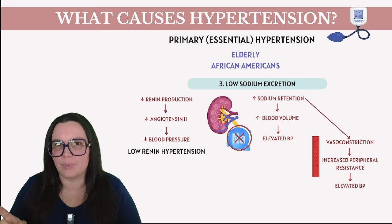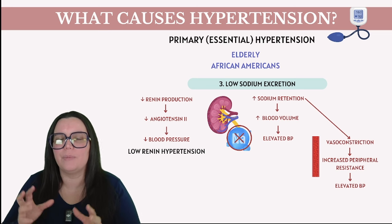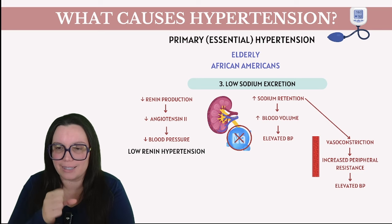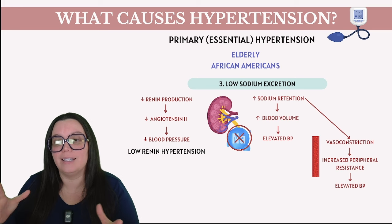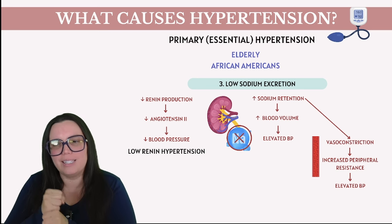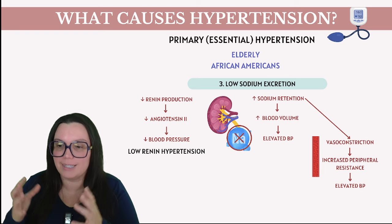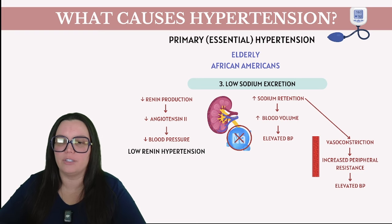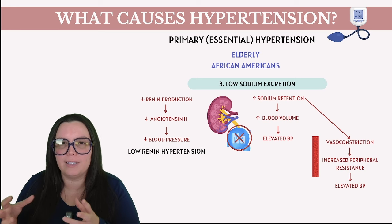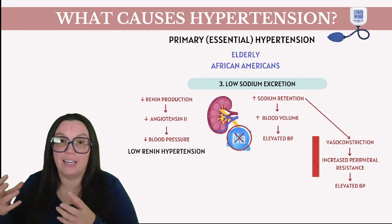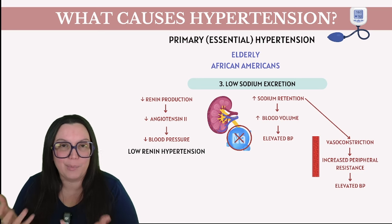Here's another intriguing aspect. The precise cellular mechanism is not fully understood, but it's known that sodium can induce vasoconstriction — that tightening of our blood vessels. The increase in sodium concentration initiates constriction of our blood vessels, ultimately leading to an increase in total peripheral resistance. That resistance causes our overall blood pressure to increase. This relationship between sodium retention, vasoconstriction, and increased peripheral vascular resistance is a key factor in understanding blood pressure dynamics.